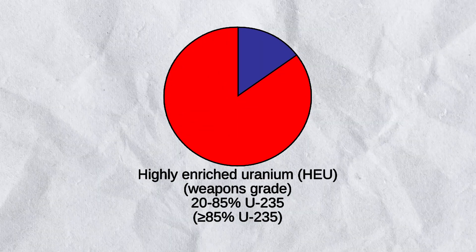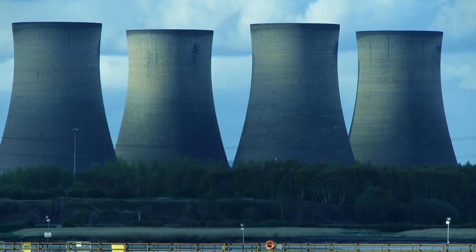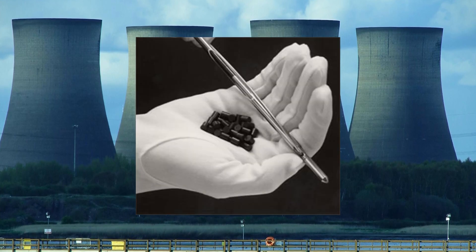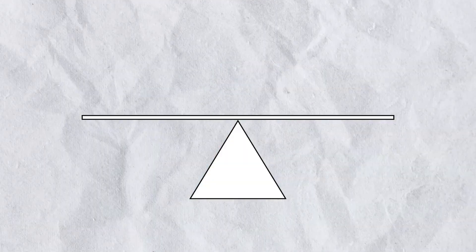A nuclear bomb uses uranium enriched to 90% of U-235 or more, packed in a way that causes a chain reaction in microseconds. A power reactor on the other hand uses only 3% to 5% U-235, arranged so that the geometry and control materials keep things stable.